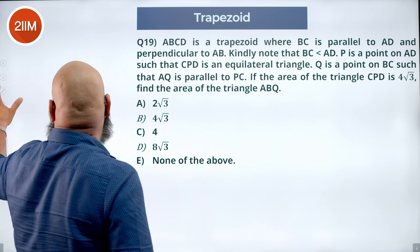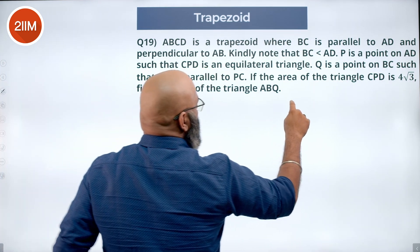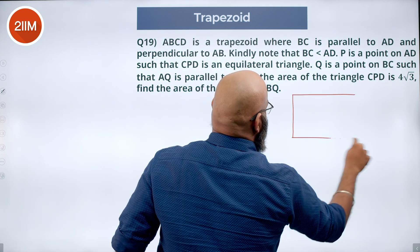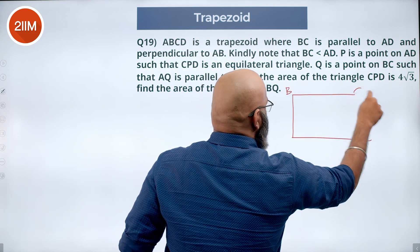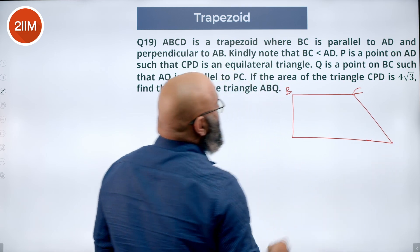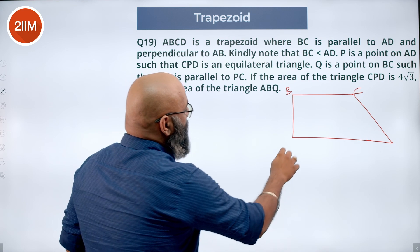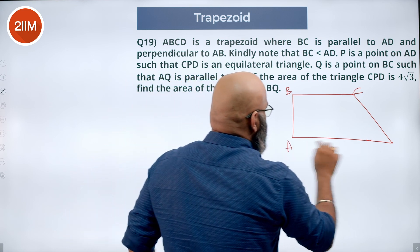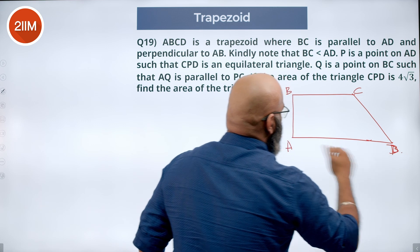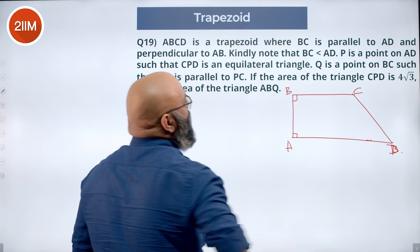Let's first plot the data we have. We have a trapezium where BC is parallel to AD and BC is less than AD. AB is perpendicular to BC, so we draw the trapezium with a 90-degree angle at B and also 90 degrees at the adjacent corner.